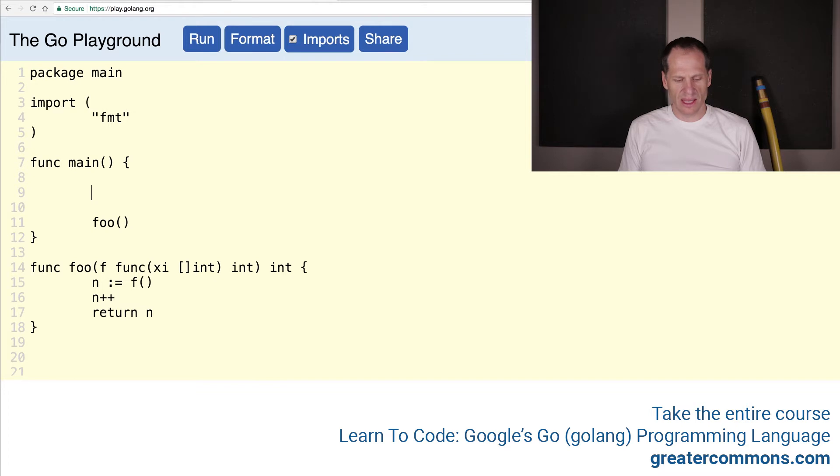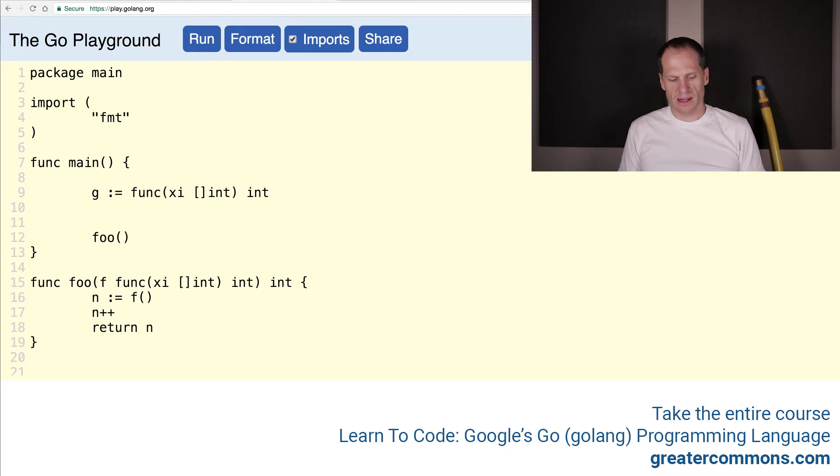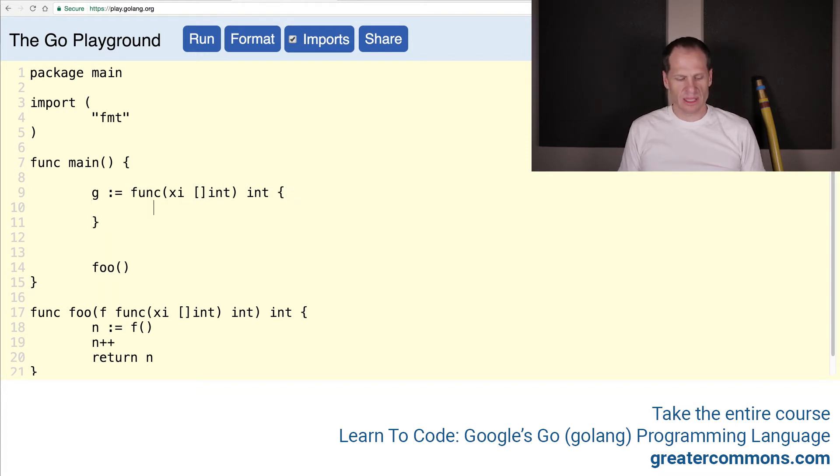And so I will call foo, and I need to pass some function in there. And to do that, I will create that function first. And so I'll just build off of this, put that right there, and assign this to g, I guess is a good variable, colon equals func, and all that, and then code, and then we're assigning that to g.